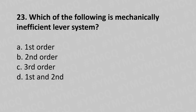Twenty-third question: which of the following is a mechanically inefficient lever system? Option A: first order lever, option B: second order lever, option C: third order lever, option D: first and second order lever. The answer is option C: third order lever.